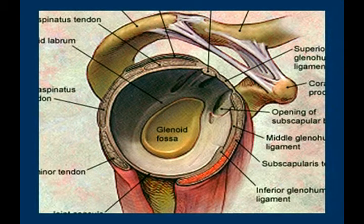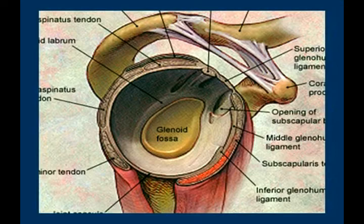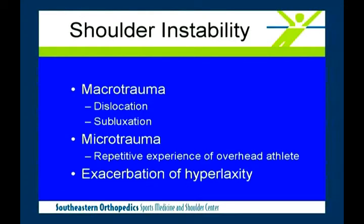For simplicity, I'm going to talk about instability in terms of probably 95% of what you see. Is it macrotrauma — a traumatic incident? Is it microtrauma, meaning repetitive motion like baseball, volleyball, or swimming? Or is it an exacerbation of hyperlaxity? Any of these can cause a whole spectrum of symptoms, and sometimes a very dissimilar spectrum of symptoms.